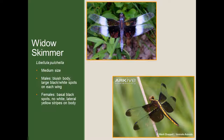Another skimmer we have is the widow skimmer — again, medium size. Males have that bluish-blackish body color. On the wings of the males, they have very large basal black spots on all four wings, and then immediately after that, large white spots. Females also have the large basal black spots on all four wings, but they also have black tips on all four wings as well. In terms of body color, the females are a drab brownish or blackish color and have lateral yellow thoracic and abdominal stripes.